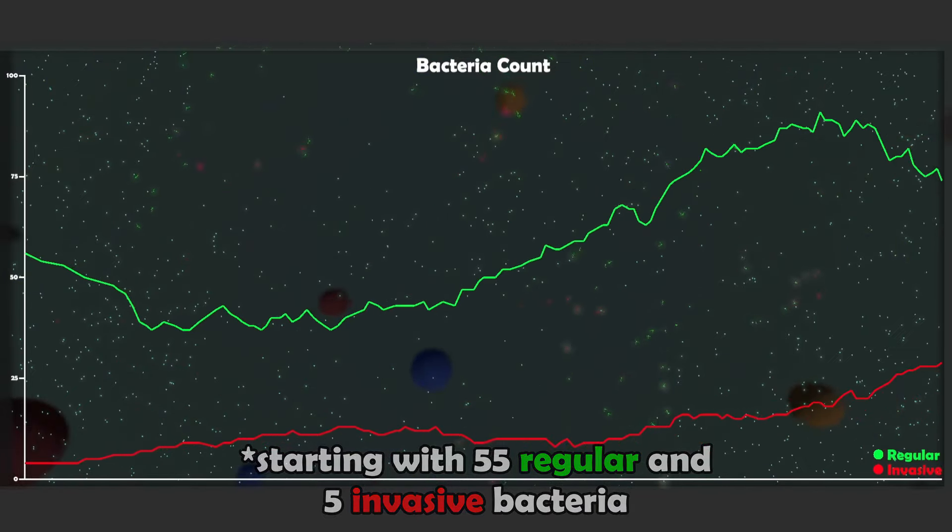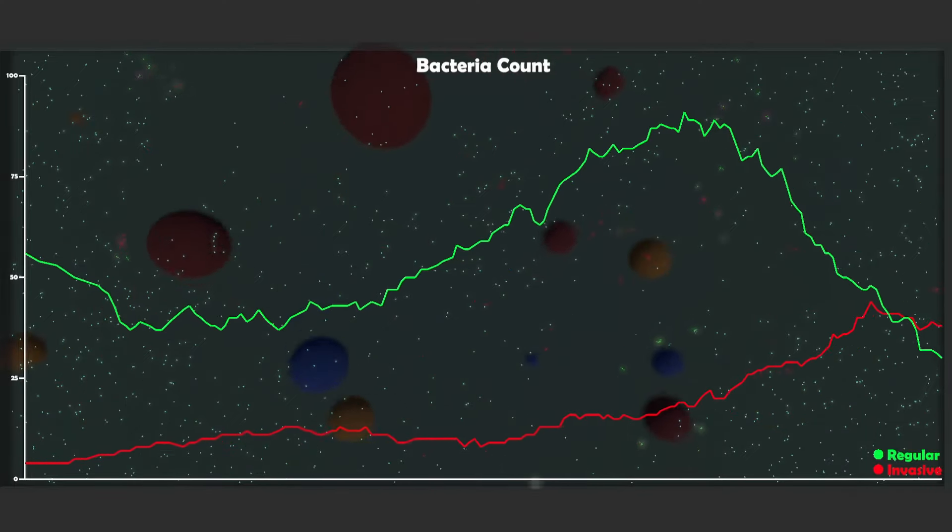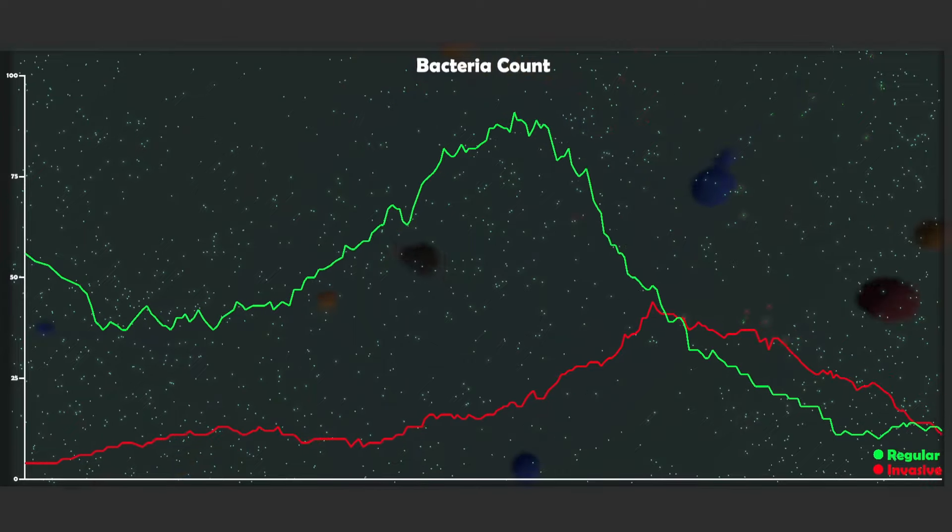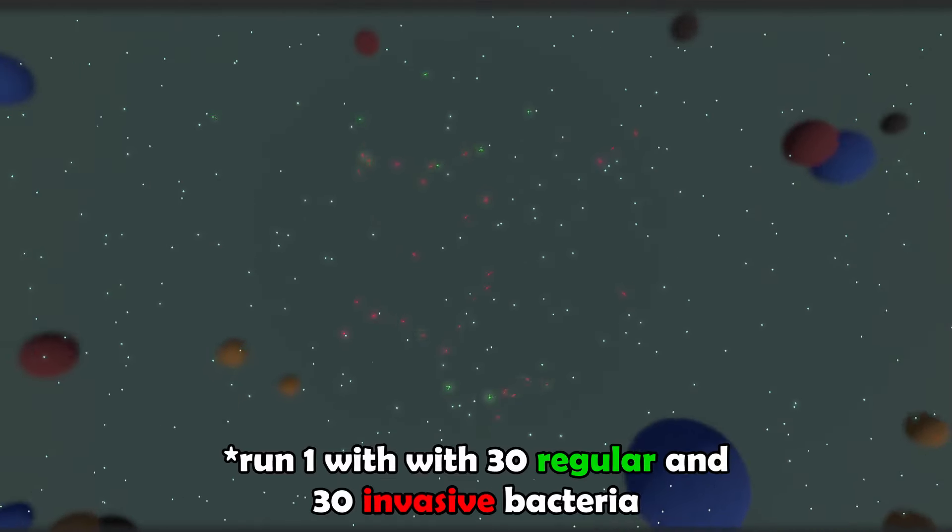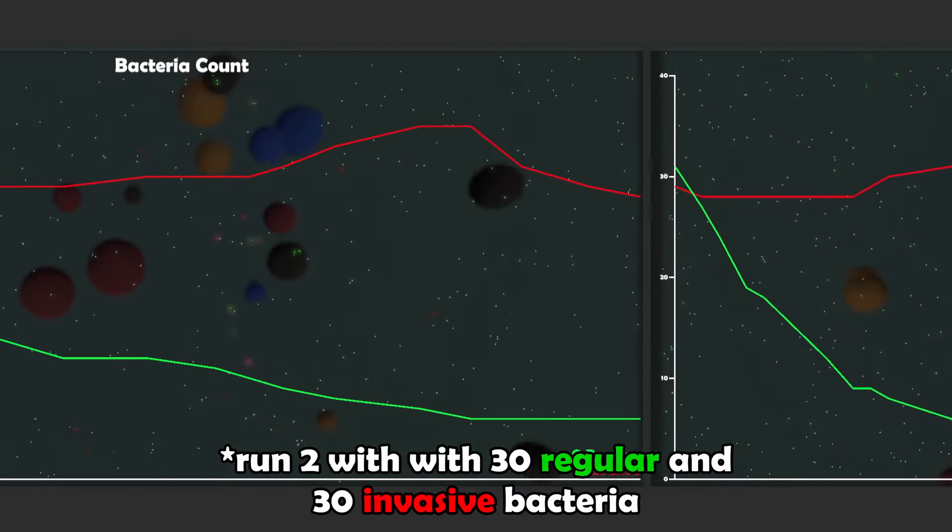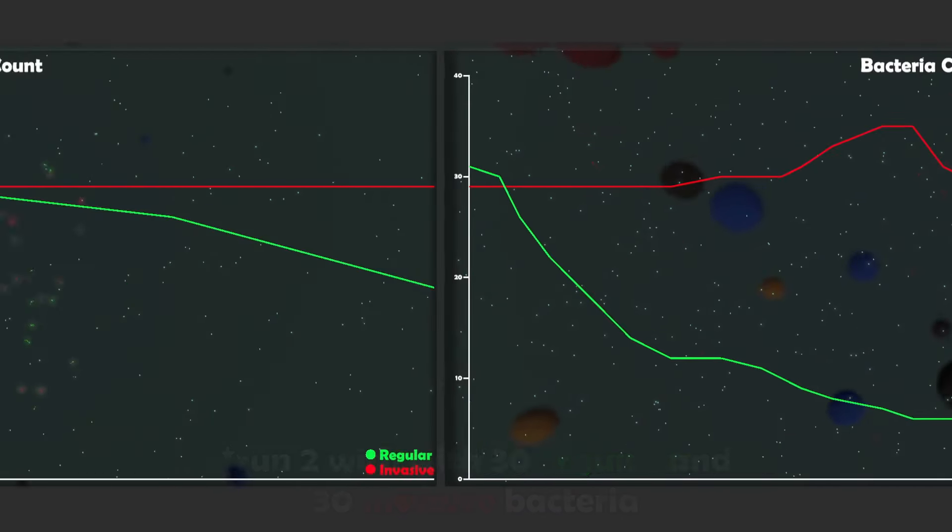In this run, you can see that the invasive ones lost since there was only five invasive bacteria and 55 regular ones. I want to make it such that the invasive bacteria always wiped regular bacteria out. So to start, I will start with equal amounts of invasive and regular bacteria. And you can see that they beat the regular bacteria to extinction every time.